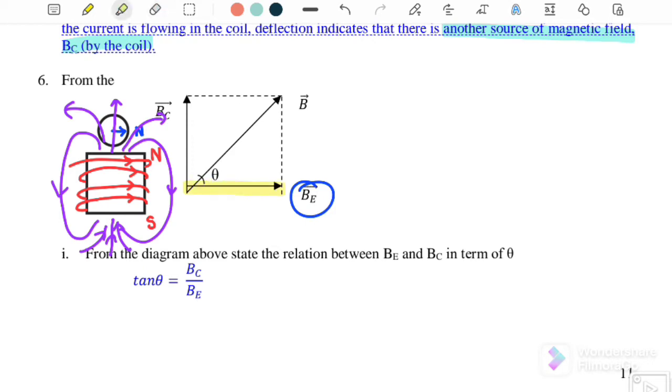Initially we have the Earth's magnetic field. When we turn on the power supply, it will produce another magnetic field by the solenoid. At the end, the needle of the compass will be deflected at an angle theta. Later you will see the compass deflected.